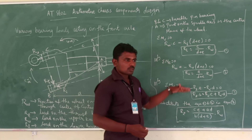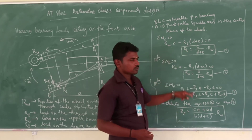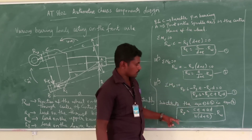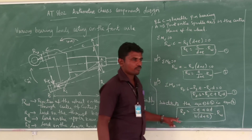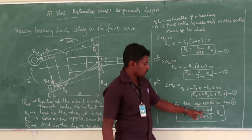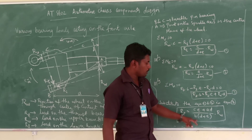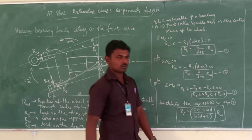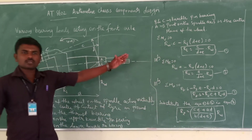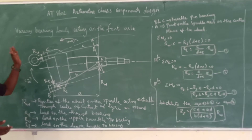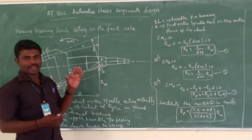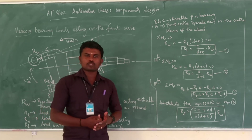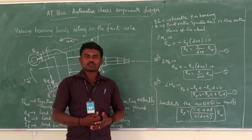Simplifying: RT × b = RL × e + RU × d. This is equation number three. Substituting the values of RL and RU from equations one and two, the final result is: RT = (c·e + a·d) / (b × (d + e)) × RW. This is the concept of various bearing loads acting on the front axle. In the next class I will teach another important topic. Thank you.